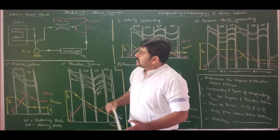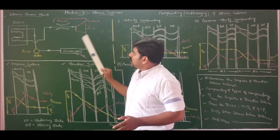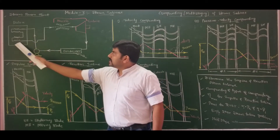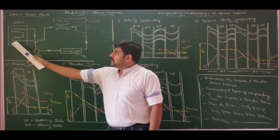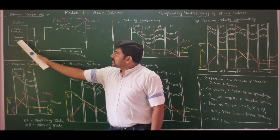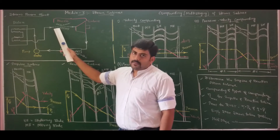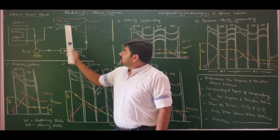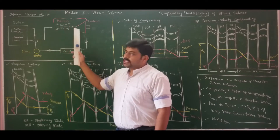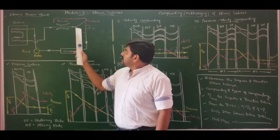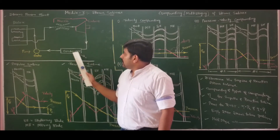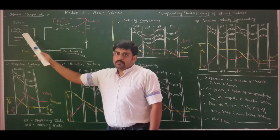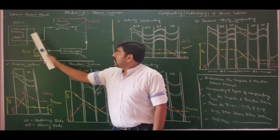Coming to the steam power plant, as shown in the figure, initially steam is generated in the boiler at two different pressures — low pressure and high pressure boiler. The high pressure, high temperature steam is passed through the nozzle where it gains velocity. This high velocity steam impinges on the rotor blades. Then the discharge steam passes through the condenser where heat rejection takes place, the liquid is pumped back to the boiler, and the cycle repeats.